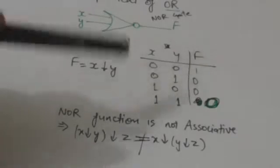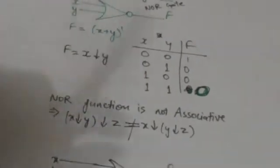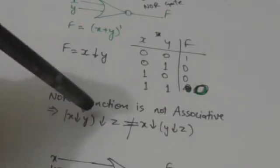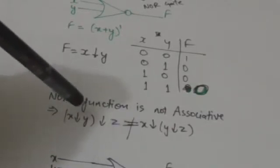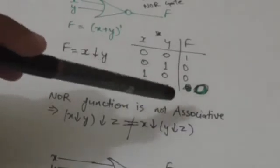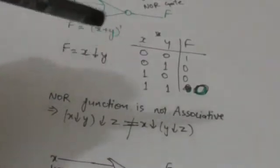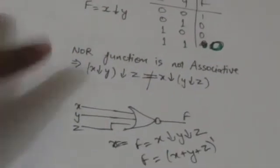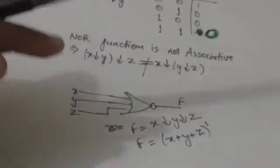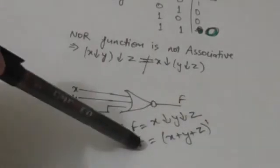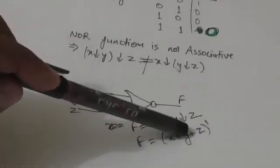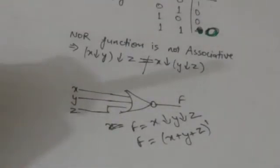The NOR function is not associative. If we evaluate NOR for X and Y first, then the result of X NOR Y taken NOR with Z is not equal to X NOR'd with the result of Y NOR Z. When a NOR gate has three inputs, its output would be X NOR Y NOR Z — that is, the complement of X or Y or Z. Thank you very much.